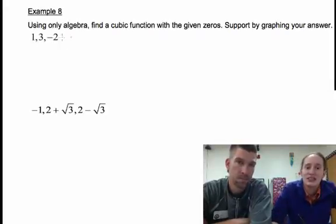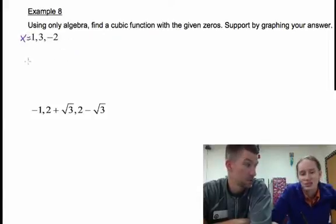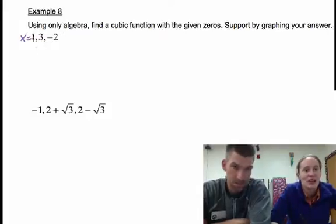So they're saying that these are our zeros, right? Roots? They could be roots, zeros, or solutions. Those all mean the same thing—x-intercepts. X equals these three things, and we want to find a cubic function that would give us those as answers. It's really pretty easy to do.